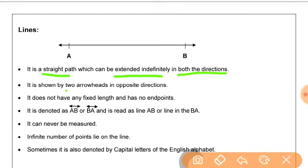It is shown by two arrowheads in opposite directions. These arrowheads represent that they can be extended. It does not have fixed length and has no endpoints because it can be extended indefinitely.